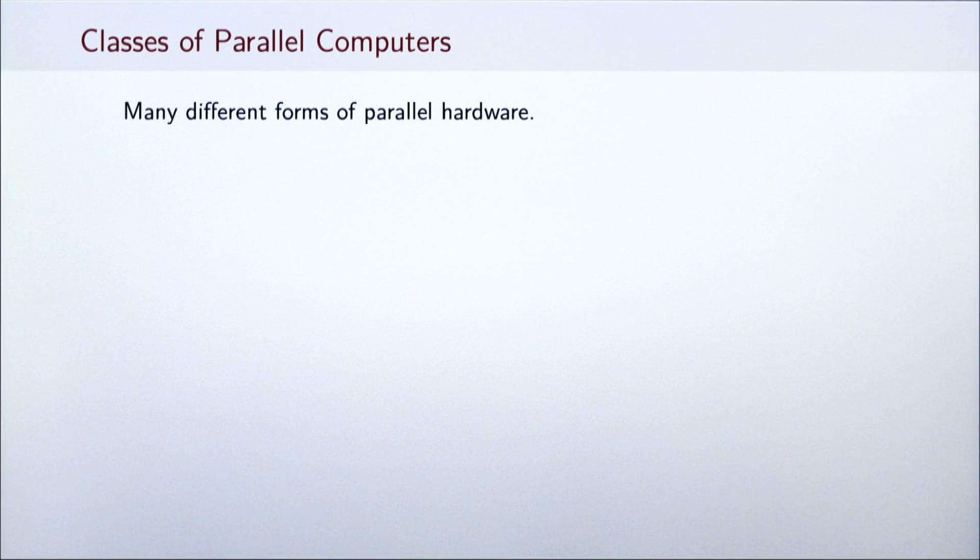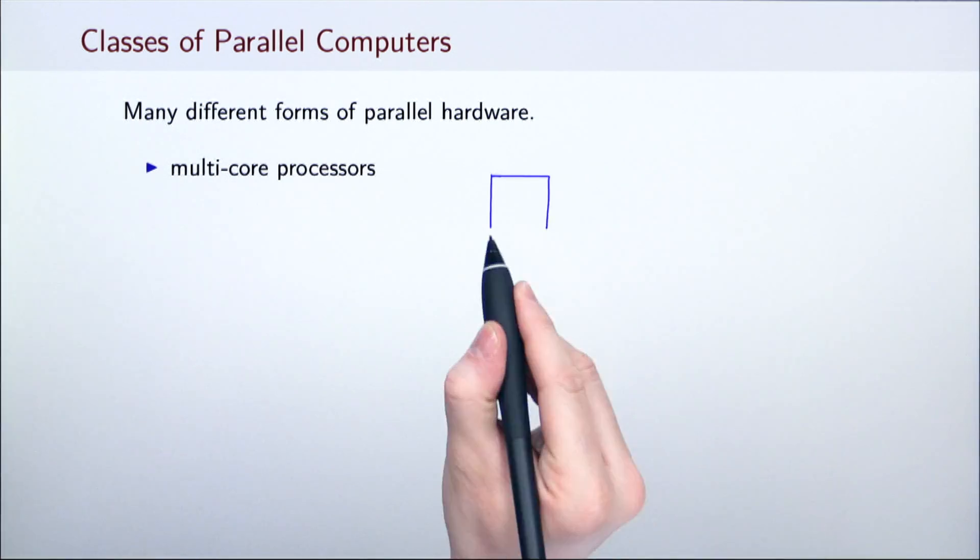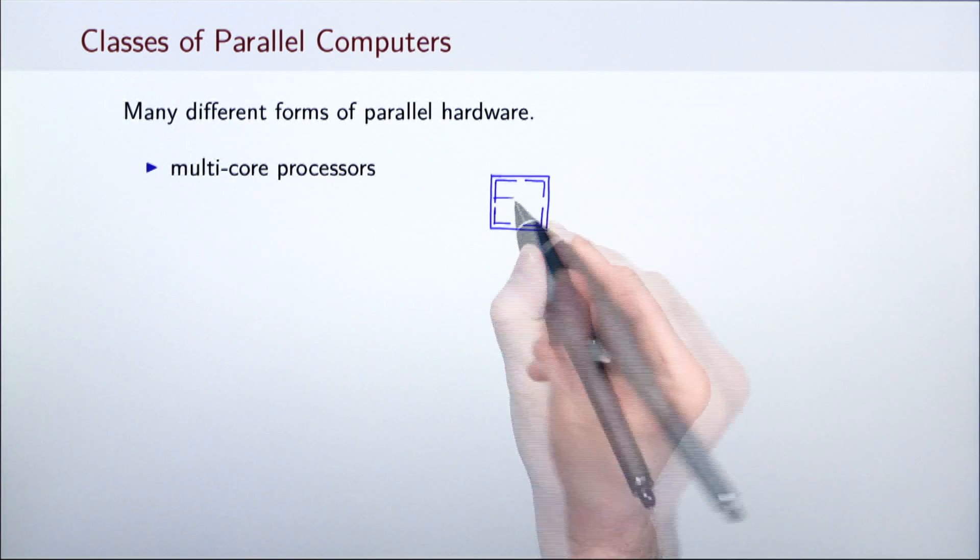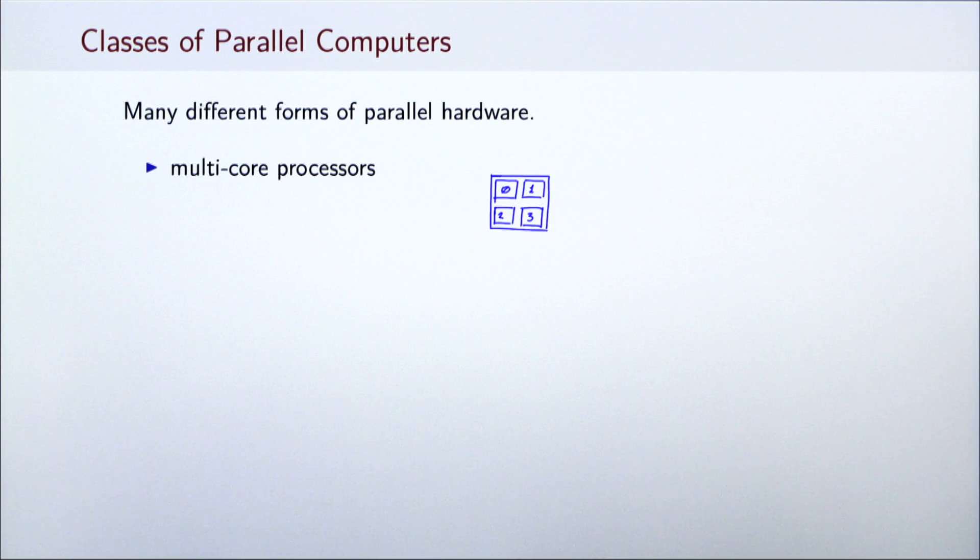The different forms of parallelism that we just saw manifest themselves on some concrete parallel hardware. It turns out that there are many classes of parallel computers out there and we will take a look at some of them. A multi-core processor is a processor that contains multiple processing units called cores on the same chip. Processor vendors such as Intel, AMD, ARM, Oracle, IBM and Qualcomm produce different models of multi-core processors.